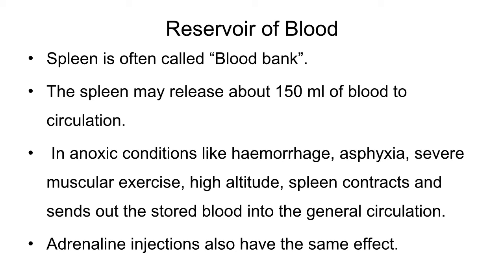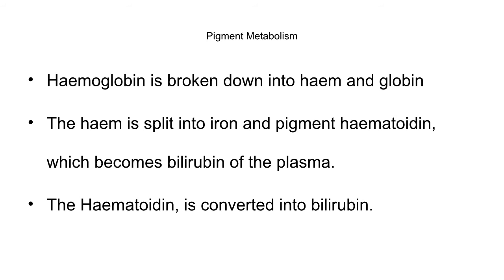When conditions become anoxic, the spleen contracts and releases the stored blood, supplying oxygen to the different parts of the body. Adrenaline injections given at high altitudes or to patients suffering from asthma also have the same effect as anoxic conditions on the spleen. Another function is the metabolism of pigments.